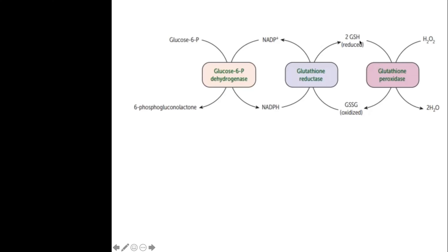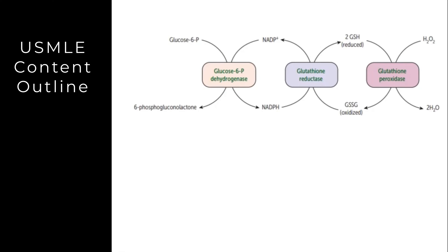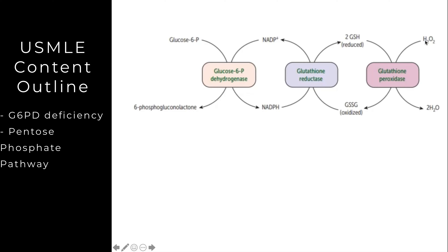With G6PD deficiency, let's look at the downstream issue: we need to take cellular stress in the form of hydrogen peroxide and turn it into something benign. In order to do that, we need a couple of ingredients — imagine it like a cookbook. We need NADPH and we need reduced glutathione; those are the salt and pepper to take something harmful to the cell and turn it into something less harmful.